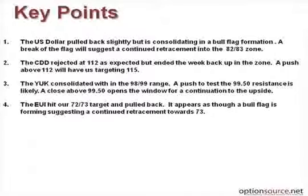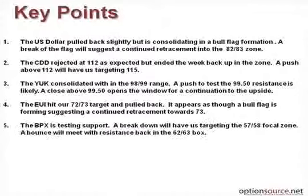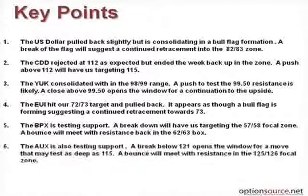The EUY hit our 72–73 target and pulled back; it appears as though a bull flag is forming, suggesting a continued retracement towards 73 once again. The BPX is testing support — a break down will have us targeting the 57–58 focal zone, while a bounce will meet with resistance back in the 62–63 box. The AUX is also testing support; a break below 121 opens the window for a move that may test as deep as 115, and a bounce will meet with resistance in the 125–126 focal zone.